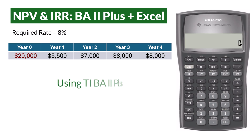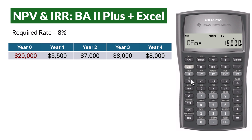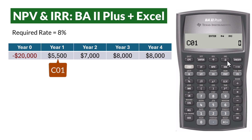Now using the BA2 Plus calculator, press the CF button. Press Second Clear Work to clear previously stored values. For CFO, input $20,000 and press the Plus Minus button to make it negative. Enter and scroll down. For C01, input $5,500. Enter and scroll down. F01 equals 1 tells the calculator that the C01 value of $5,500 only occurs once in a row.